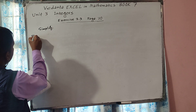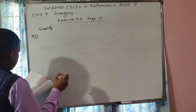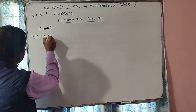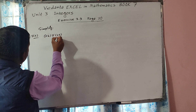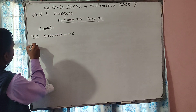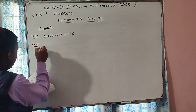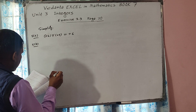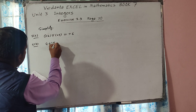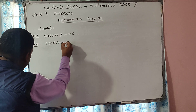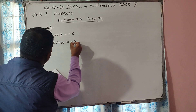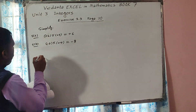5B: plus 2 multiplied by plus 3. Do you know plus into plus? Plus into 3 is 6, so plus 6 is the answer. Now 5B: minus 2 multiplied by plus 4. Minus 2 multiplied by plus 4 — minus into plus gives minus 8. So minus 8 is the answer.